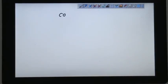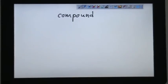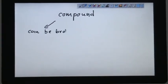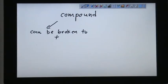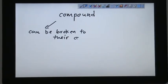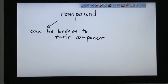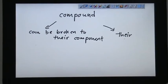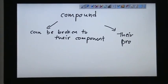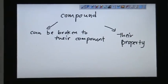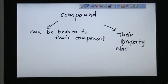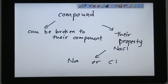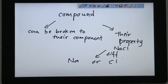So nevertheless, when we talk about compound, we are dealing with two main characteristics. One is they can be broken down to their component. And second characteristic is their chemical property or physical property are so much different from the component. The property, let's say NaCl, is so much different from Na or Cl. They are different.